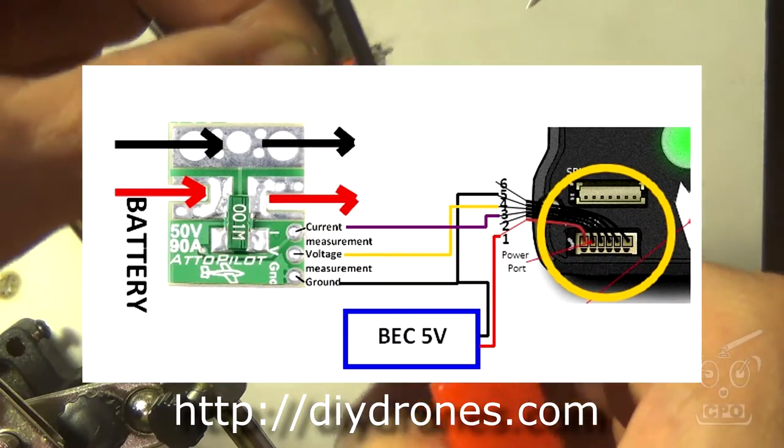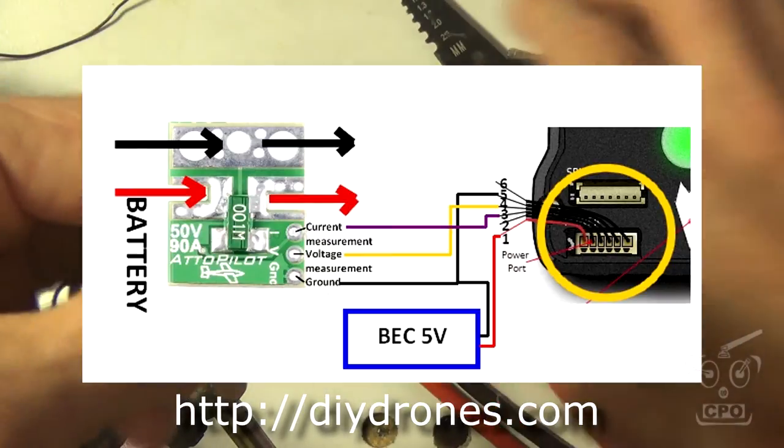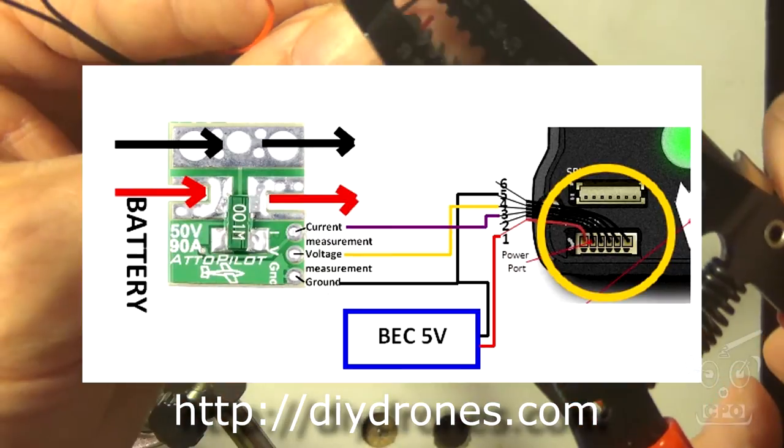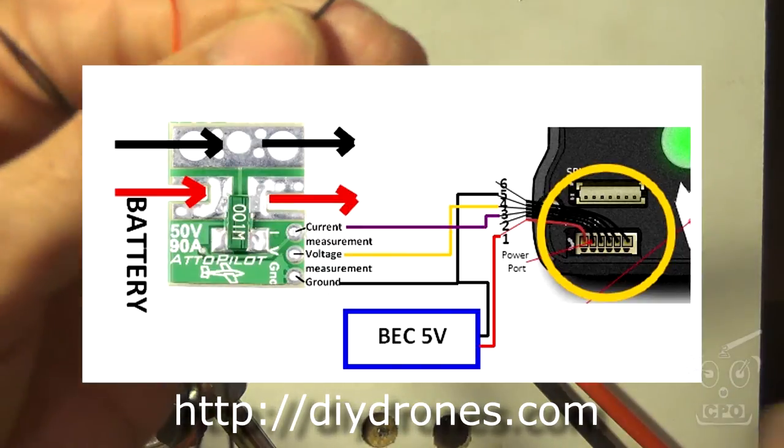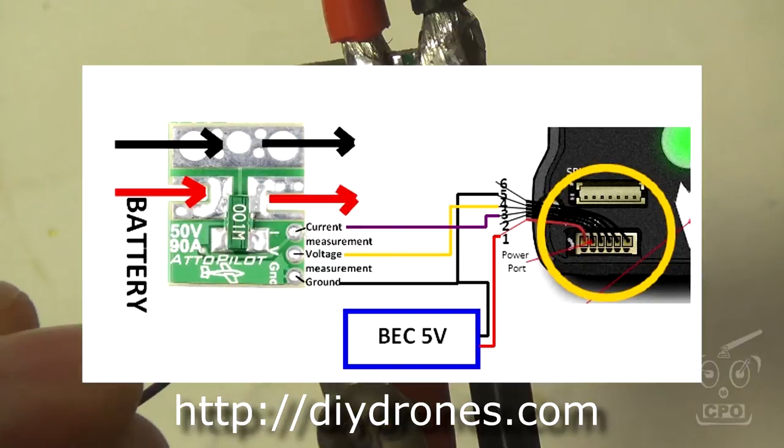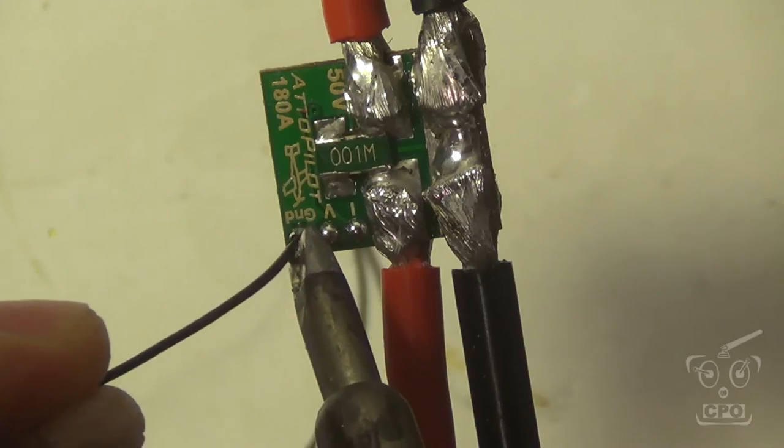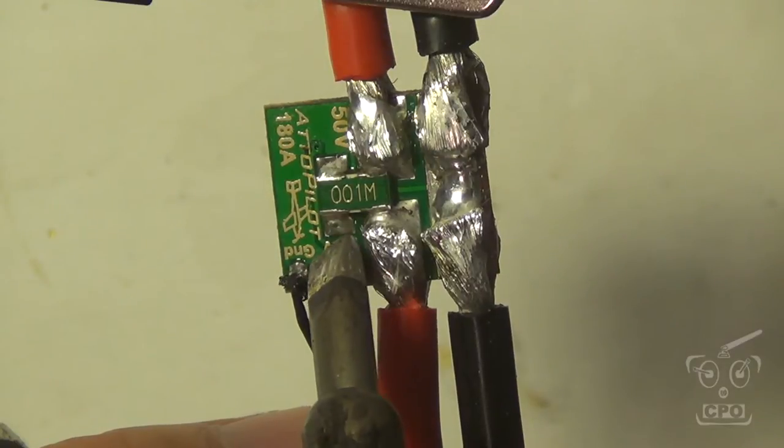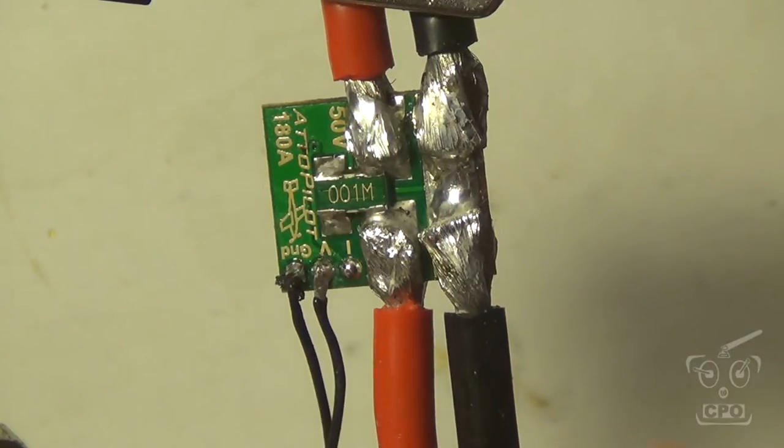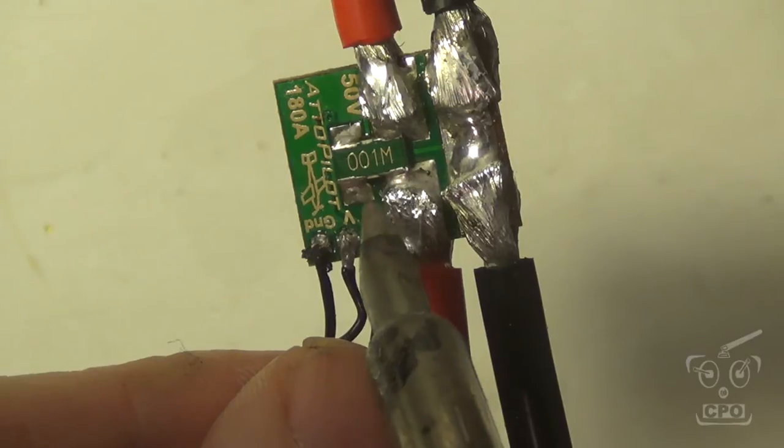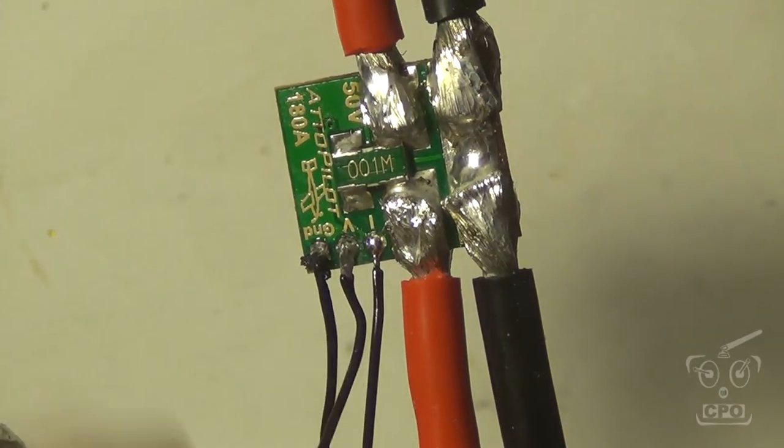And using my typical internet resources to figure out which wires I need. Now there is a way to add external BEC power to this and power the PixHawk off of this. But I'm not going to use that right now. I may do that later. But for now, all I want to do is connect the ground, the voltage, and the current leads from this autopilot to my PixHawk. And so I need those three wires.